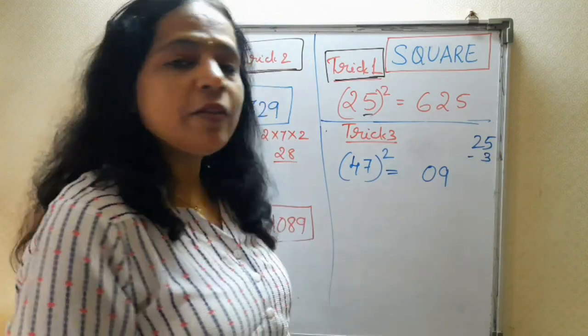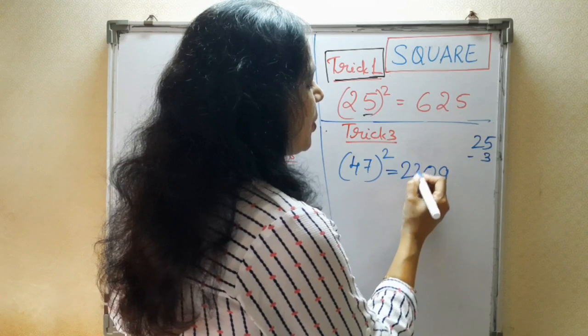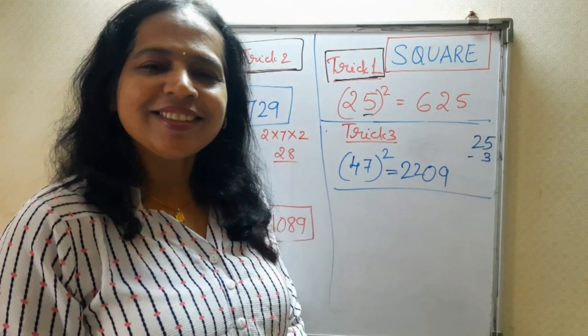Now, subtract this. 25 minus 3 is how much? 22. So, this is our answer. Isn't it easy?